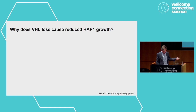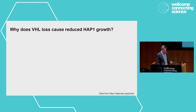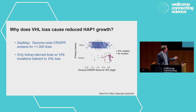Because this is a holistic assay — we're not measuring a specific function of VHL — we thought maybe we can get at mechanism by modifying the assay. Why does VHL loss actually cause cells to grow more slowly? It's not a phenomenon unique to HAP1 cells; virtually all cells assayed in DepMap with CRISPR screening show a VHL growth defect. It's really only cells of renal origin that already have a VHL mutation where we don't see dropout.